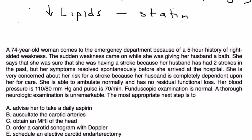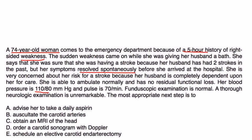Let's take a look at some vignettes. A 74-year-old woman comes to the emergency department because of a five-hour history of right-sided weakness. The sudden weakness came on while she was giving her husband a bath. She says that she was unsure that she was having a stroke because her husband had two strokes in the past, but her symptoms resolved spontaneously before she arrived at the hospital. She is very concerned about her risk for a stroke. Blood pressure is 110 over 80, pulse is 70. Fundoscopic exam is normal. A thorough neuro exam is unremarkable. Most appropriate next step is?